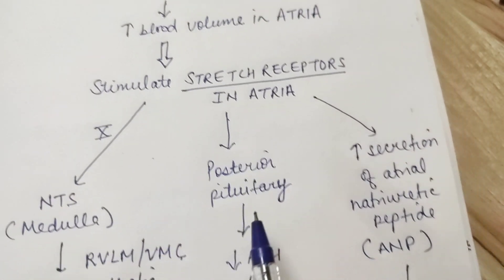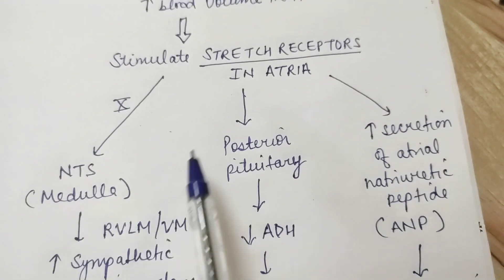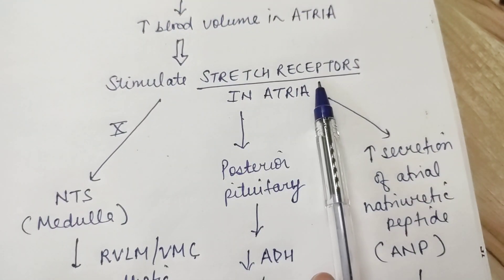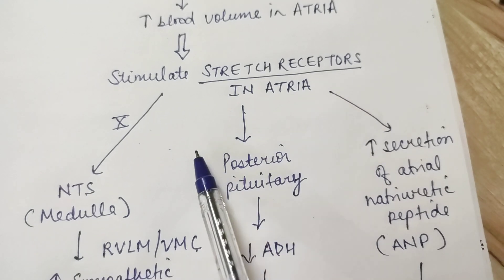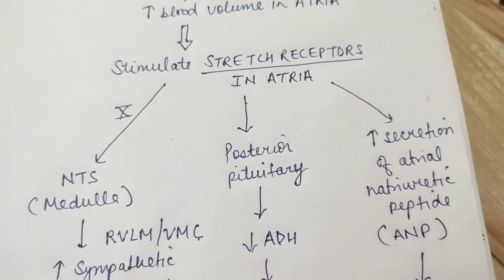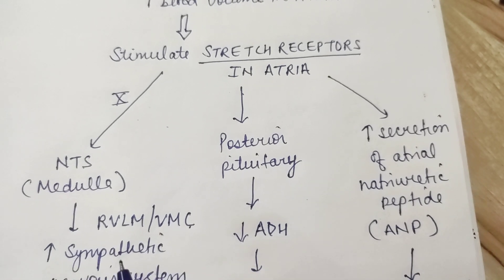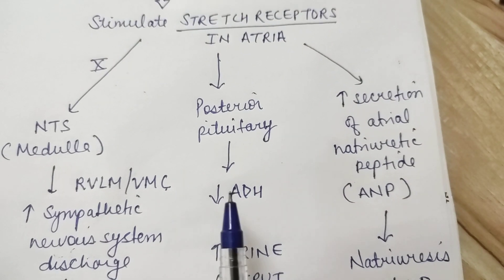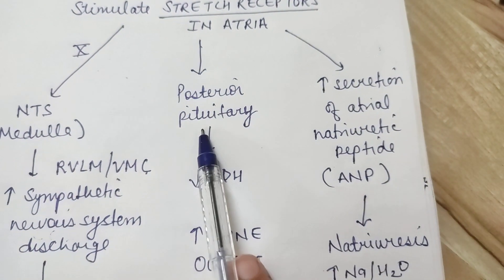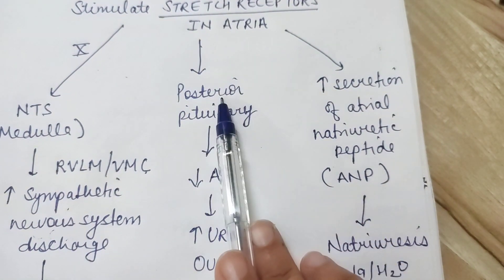The second thing is: whenever there is an increase in blood volume, there is volume overload on the heart and on all the vessels, which leads to an increase in blood pressure. To compensate, there should be a decrease in blood volume, and that can be done via the kidney.